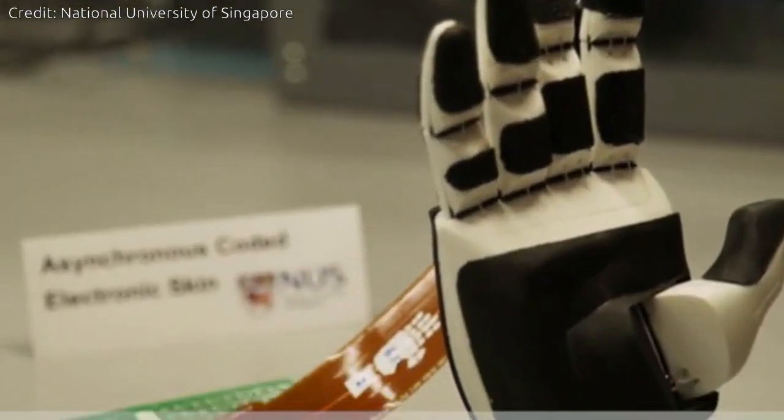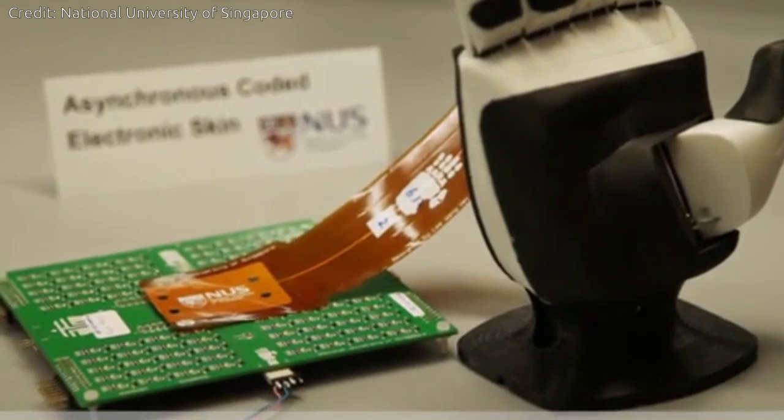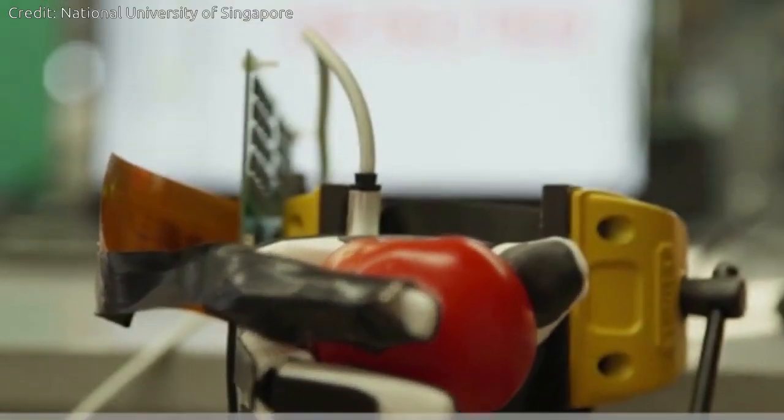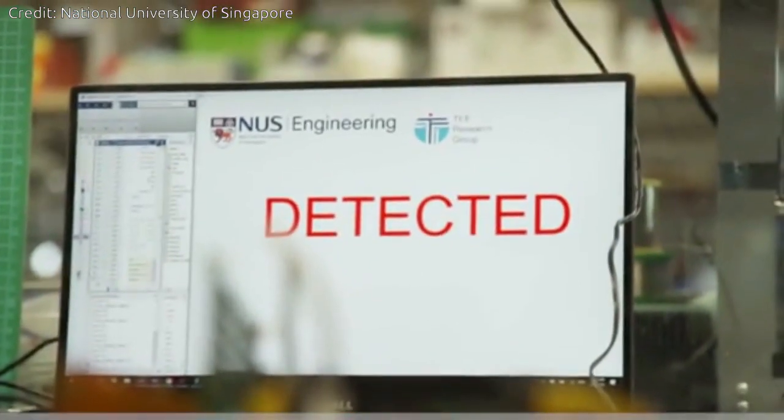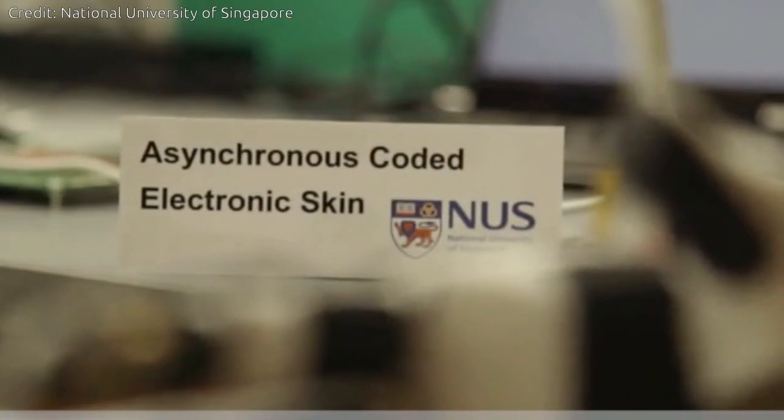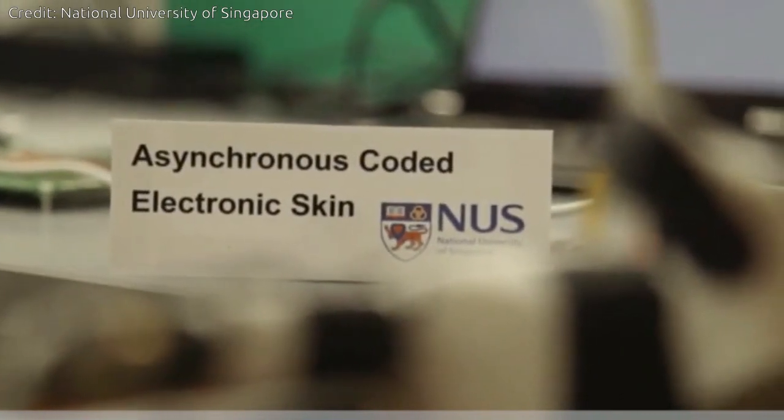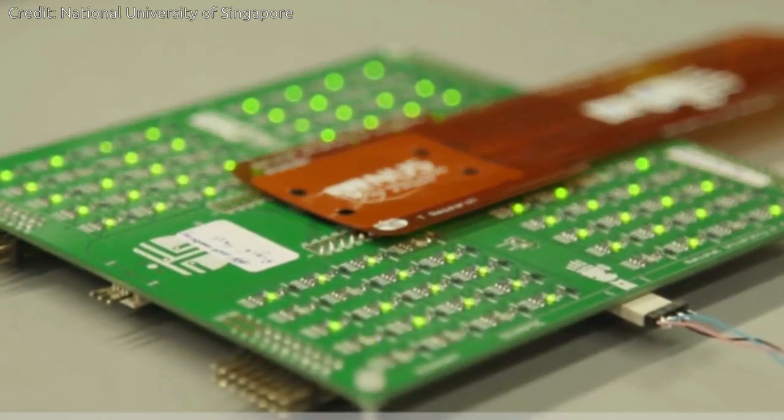ACES can detect touches more than 1,000 times faster than the human sensory nervous system. For example, it is capable of differentiating physical contact between different sensors in less than 60 nanoseconds, the fastest ever achieved for an electronic skin technology.